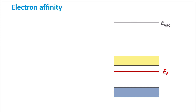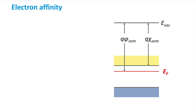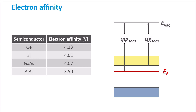Before we can construct the band diagram, we need to know how the band gaps of the different materials will align. This alignment is related to the electron affinity of both materials that will make up the junction. As a reminder, the electron affinity is the potential difference between the bottom of the conduction band and the vacuum level. The work function is another important parameter, defined as the potential difference between the vacuum level and the Fermi energy, and is controlled by the doping concentration. Different semiconductor materials have quite different values for the electron affinity, as shown in the table.